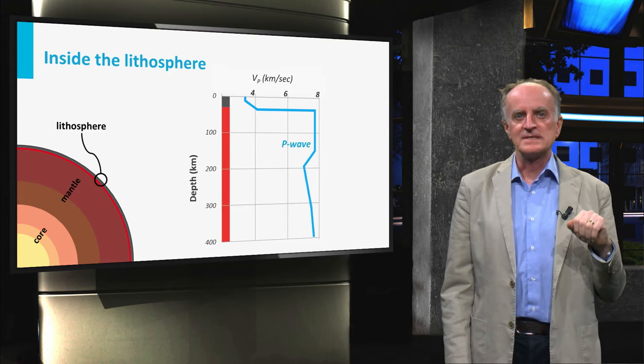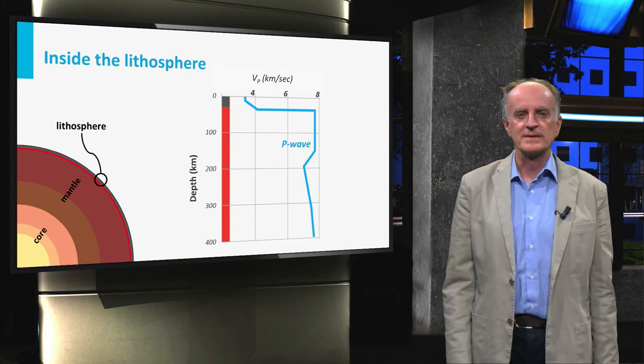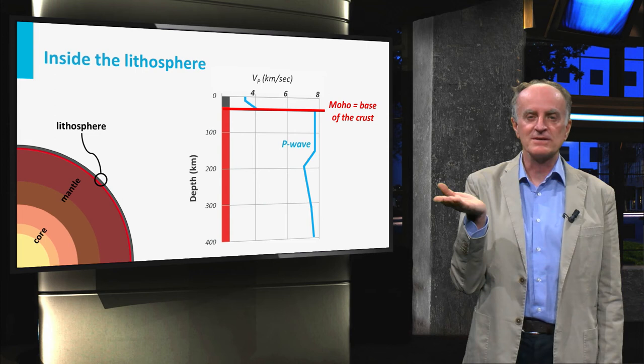Focusing now on the structure inside the lithosphere, you can see a major change in seismic velocities at around 30 kilometers depth. This major discontinuity is called MOHO and defines the base of the crust.